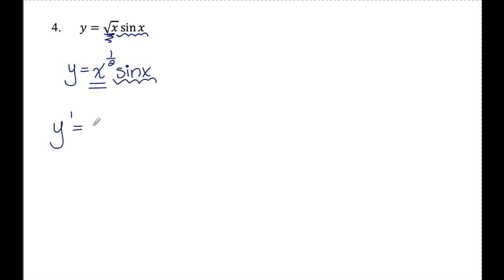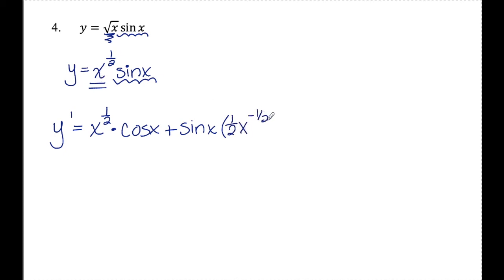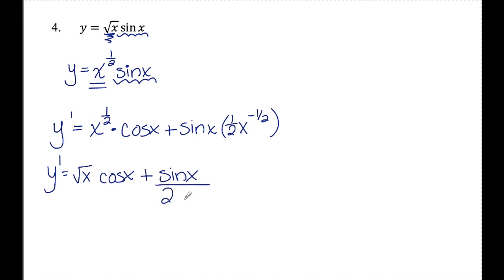Finding y prime with the product rule: first, x to the one-half, times the derivative of the second — the derivative of sine x is cosine x — plus the second, sine x, times the derivative of the first. Using the power rule, the one-half comes to the front giving one-half times x to the negative one-half. The first term can be rewritten as rad x times cosine x. For the second term, sine x is in the numerator, the 2 is in the denominator, and x to the negative one-half becomes rad x in the denominator, giving sine x over 2 rad x.